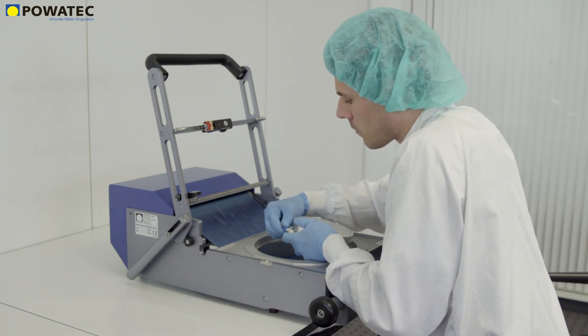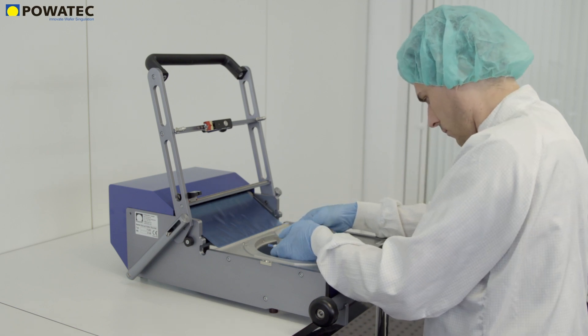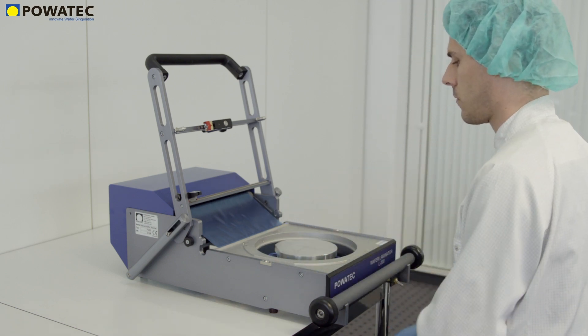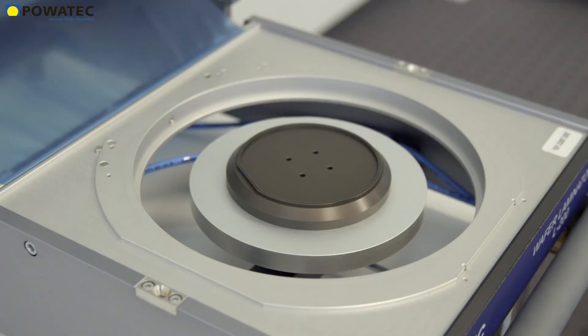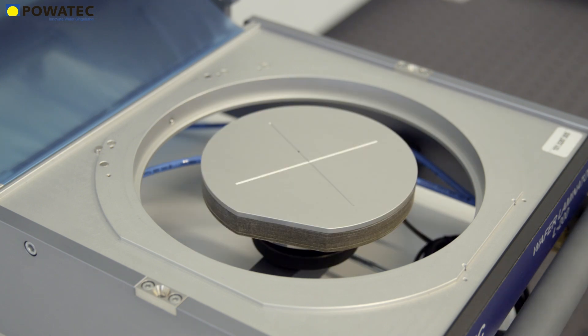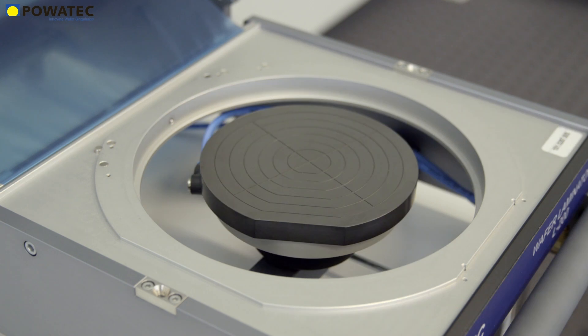In addition, different chucks can be used for special applications. This includes a ceramic chuck for the highest demands on surface flatness, non-contact chucks, or heated chucks. Optional chucks are also available that prevent the knife from touching the wafer edge while ensuring a film overhang of 0.5 millimeters.